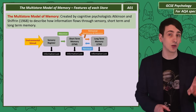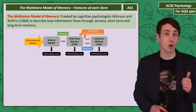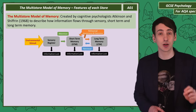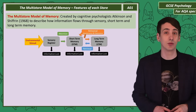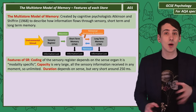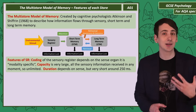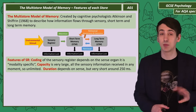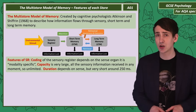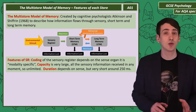What we need to know about these three stores are their features: how the information is coded, so what form the information is in; the capacity, so how much the store can hold; and the duration, so how long that store can hold information. Starting with the sensory register: the information comes directly from the senses and the way that information is stored depends on the sense — we would call that kind of coding modality specific. Capacity is very large, but the duration, how long that information is held, is very short — it can be around 250 milliseconds.